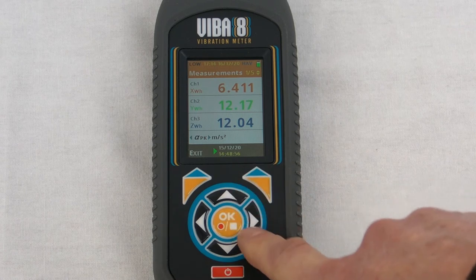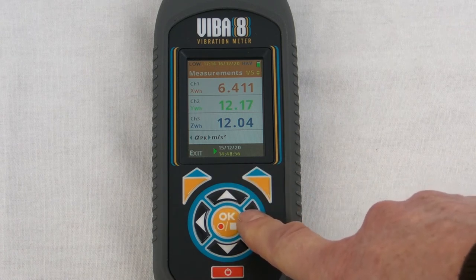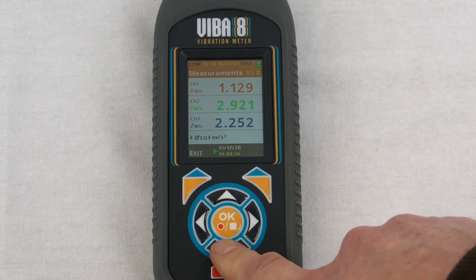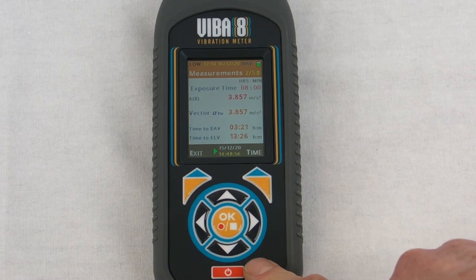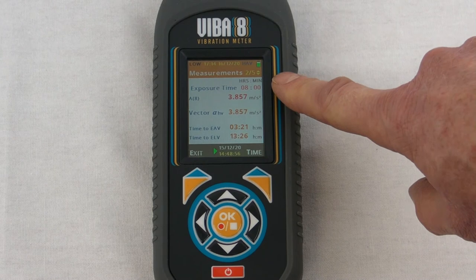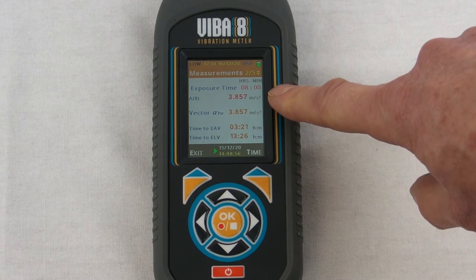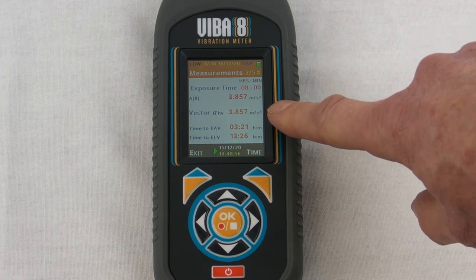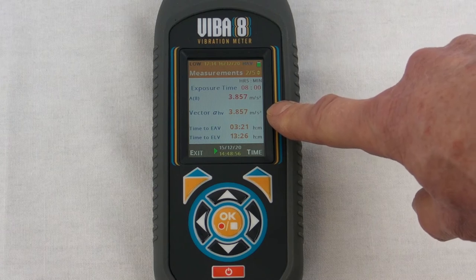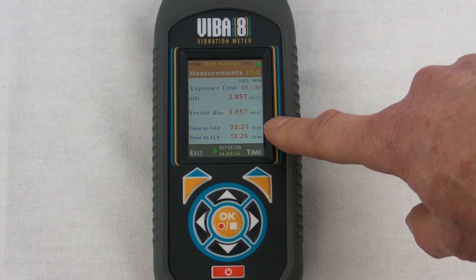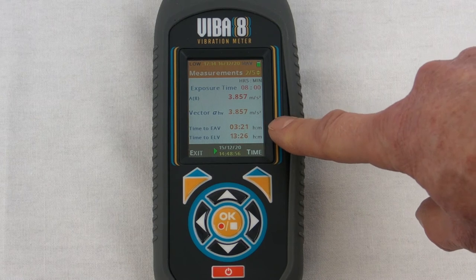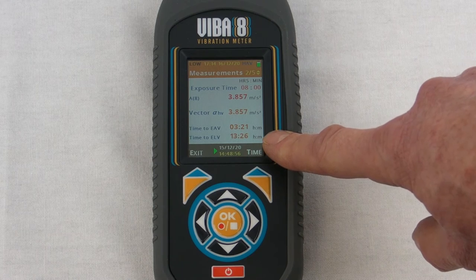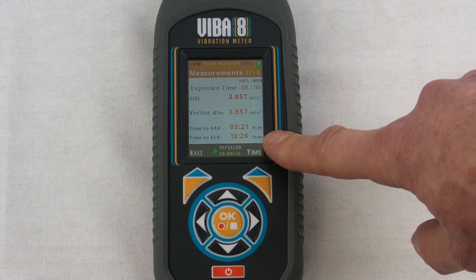So they're the three measurements we got for each of the x, y and z axes. You can also on the screen look at the peak value. Pressing the downward button key gives you another screen which shows all the exposure figures. So based on an eight hour working day that would give us the a8 exposure figure in meters per second squared, also the vector sum which of course is the same because we're basing it on eight hours. And then the time to reach the action value would be three hours and 21 minutes, alternatively time to reach the limit value would be 13 hours and 26 minutes.